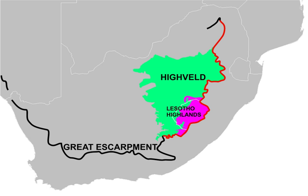Cities located on the Highveld include Johannesburg, Pretoria, Bloemfontein, Vereeniging, Welkom, Carletonville, and the cities of the West Rand and East Rand. The diamond mining city of Kimberley lies on the border of the Highveld and the southeastern Kalahari.